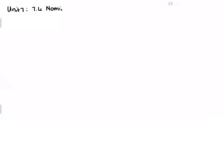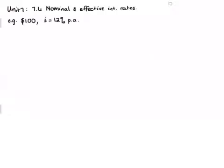In Unit 7 we look at 7.4 nominal and effective interest rates. Imagine you put a hundred dollars in the bank and the bank offers you 12% per annum.